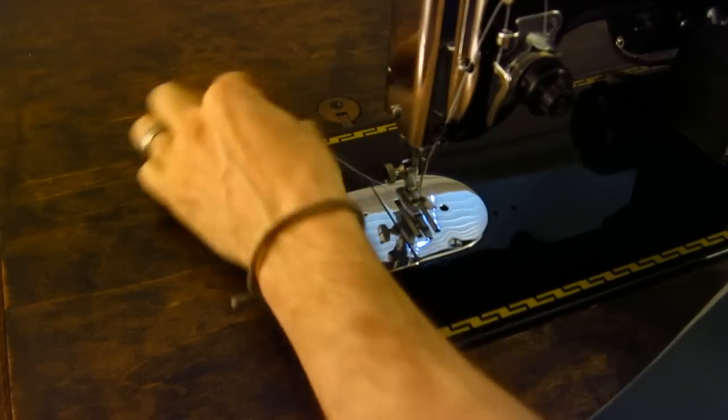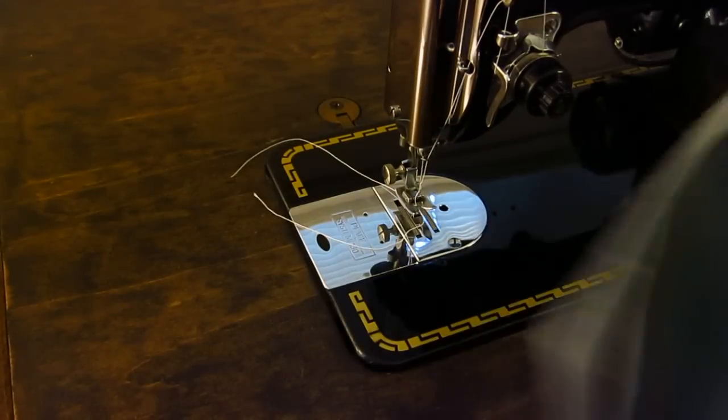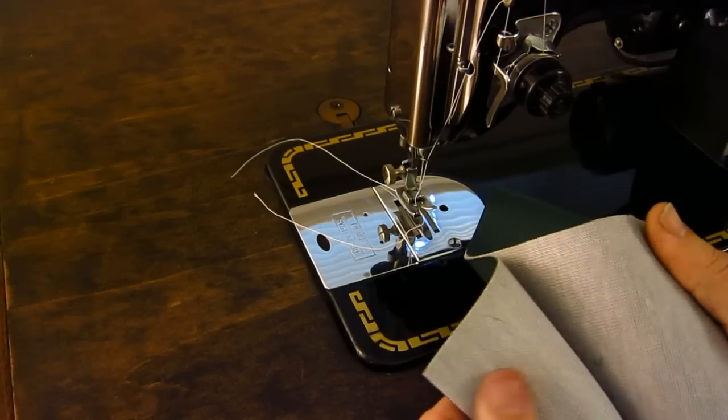And I'll show you the bottom of the machine too, the underside. This is super robust. These things are really overbuilt.